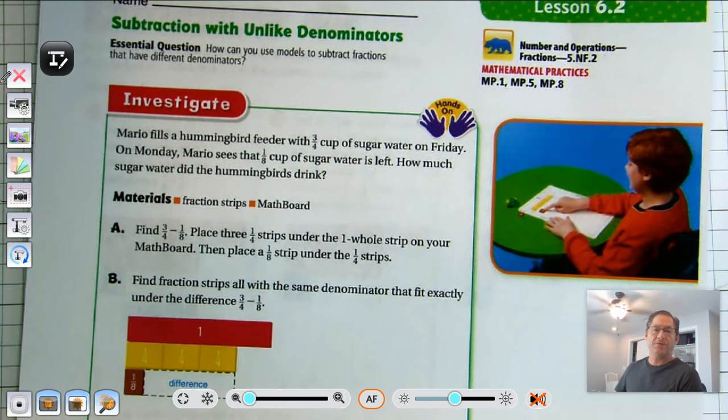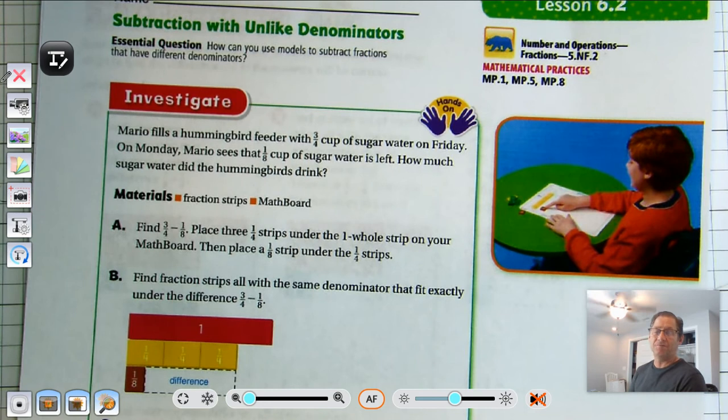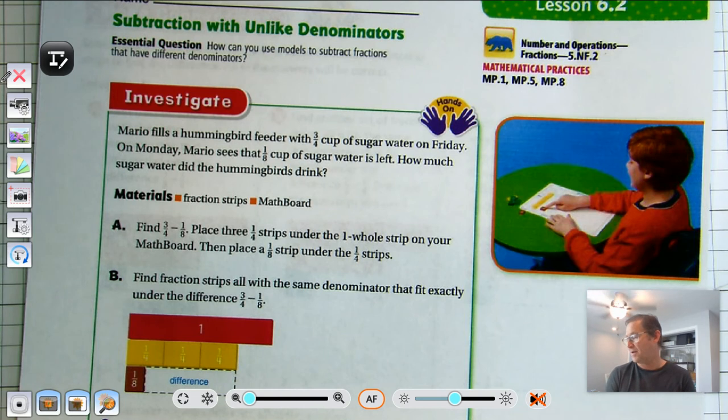So Mario fills a hummingbird feeder with three-fourths cup of sugar water on Friday. On Monday, Mario sees that one-eighth cup of sugar water is left. How much sugar water did the hummingbirds drink?